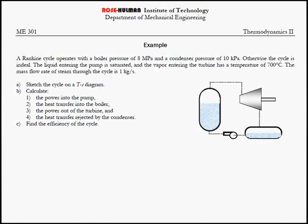This problem asks us to do several different things. We have an almost ideal Rankine cycle. The only way it's not ideal is that the inlet of the turbine is not a saturated vapor. But other than that, it is an ideal Rankine cycle. We're asked to sketch the TS diagram, define the pump power, the heat transfer rate into the boiler, power out of the turbine, and finally find the cycle efficiency.